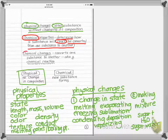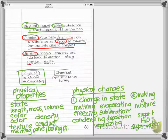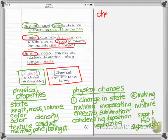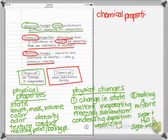Chemical changes alter or convert one substance to another — also known as a chemical reaction. What do chemical properties and chemical changes have in common? When something is chemical, it makes something new. The words used to describe chemical properties and chemical changes are often the same words.